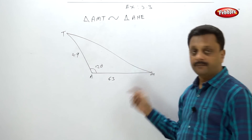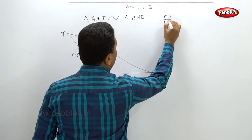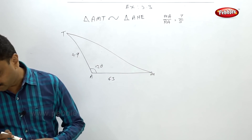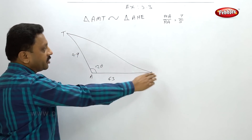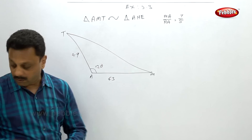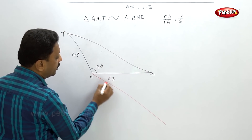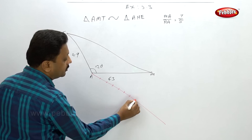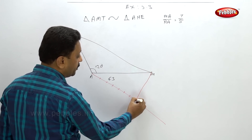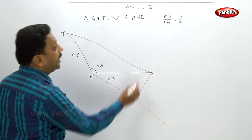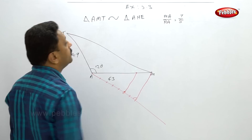AT is 4.9, so it is very easy to construct the first triangle. They are given MA upon HA is 7 by 5 — the second triangle is smaller. First draw the larger triangle. Then take any line at any angle, make 7 parts: 1, 2, 3, 4, 5, 6, 7. MA is 7, so connect M to the 7th part. Draw a congruent angle at the 5th part to get point H.